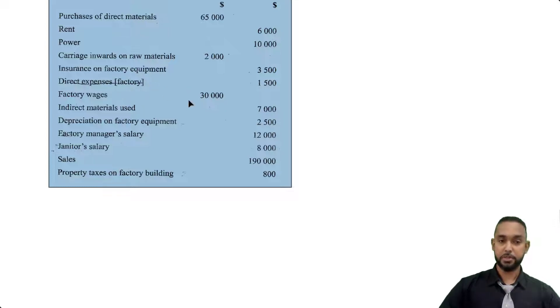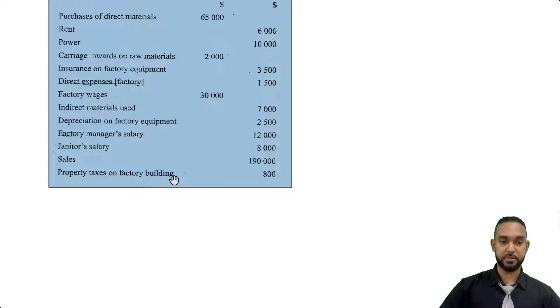Also included are factory wages, indirect materials, depreciation on factory equipment, factory manager's salary, janitor's salary, and sales and property taxes on the factory building.